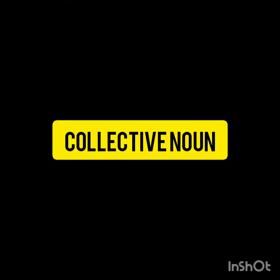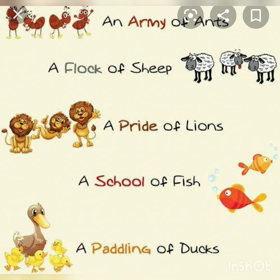Next is collective noun. Collective nouns represent a group of people, animals and things considered as one complete whole. For example, a group of ants is known as an army of ants. Similarly, a group of ships is called a fleet of ships.